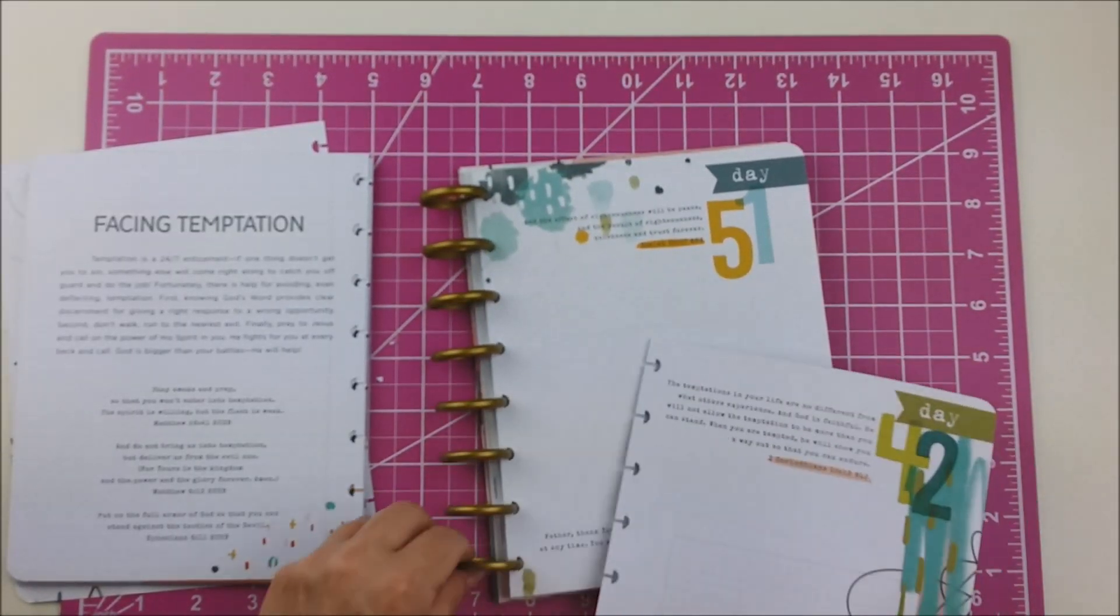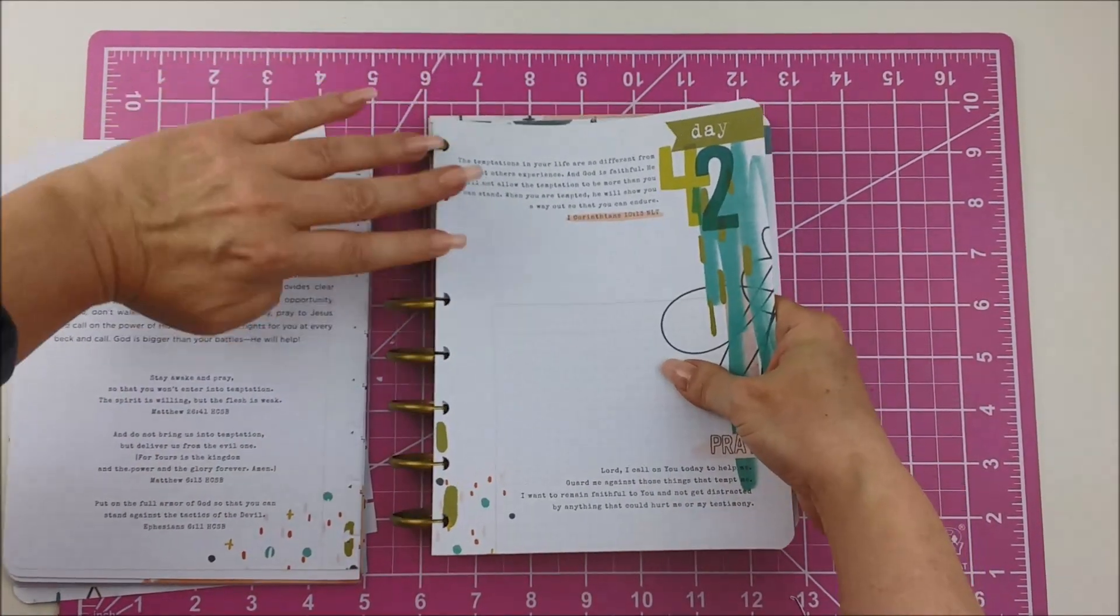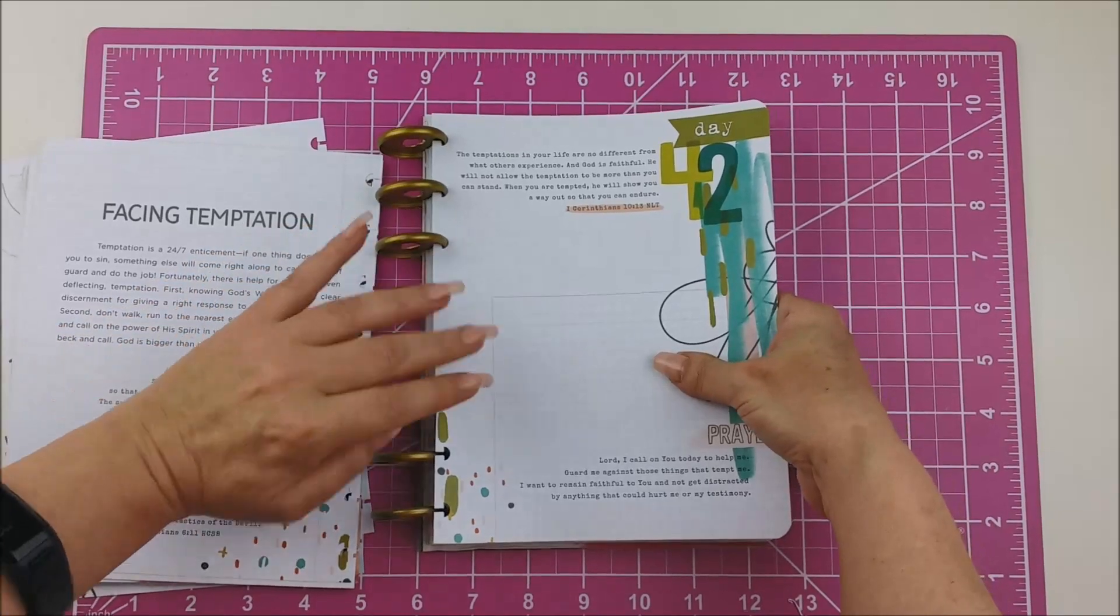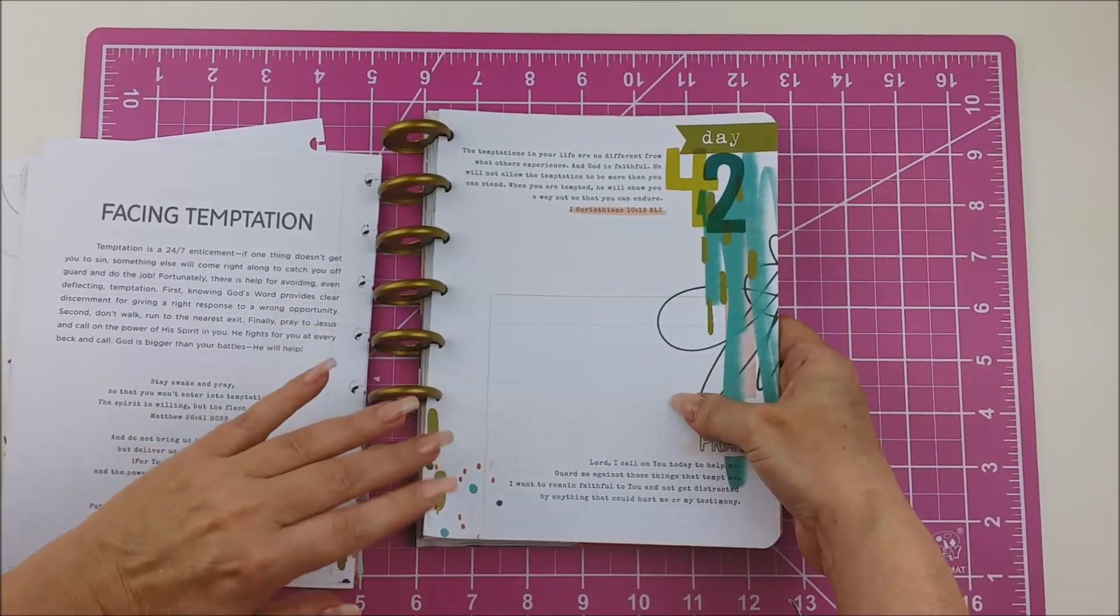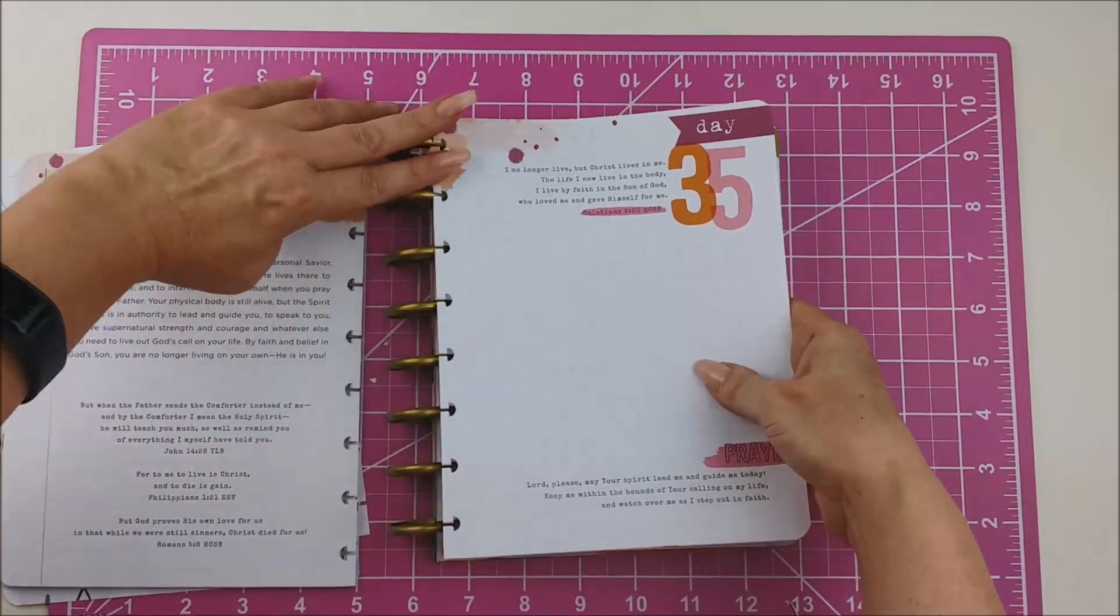Okay, now do you see we're getting some stability there? Now I'm just able to pop them in. Because my discs are staying a little bit more in formation. And we've got a stronger foundation for everything. So now the pages are just kind of popping in. It gets really easy.